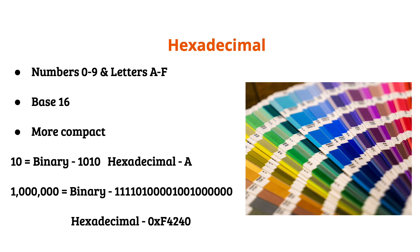For example, the number 10 in binary is represented as 1010. With hexadecimal, the number 10 is represented as the letter A. For this simple example, you go from needing four characters to represent a number, to only needing one.